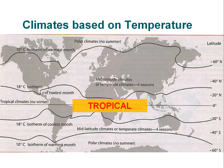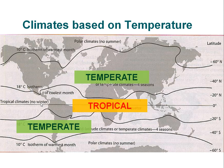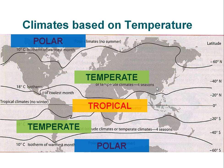The equator we call tropical — it has no winter. In the mid-latitudes, we call it a temperate climate; they have all four seasons. And the polar climates have no summer.